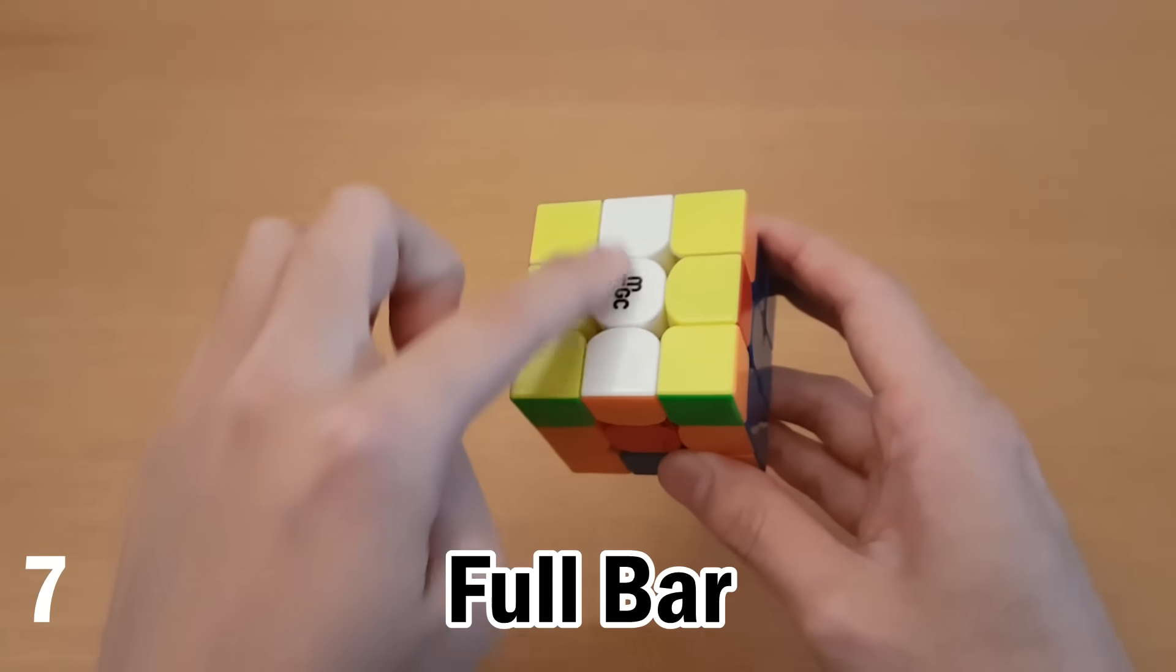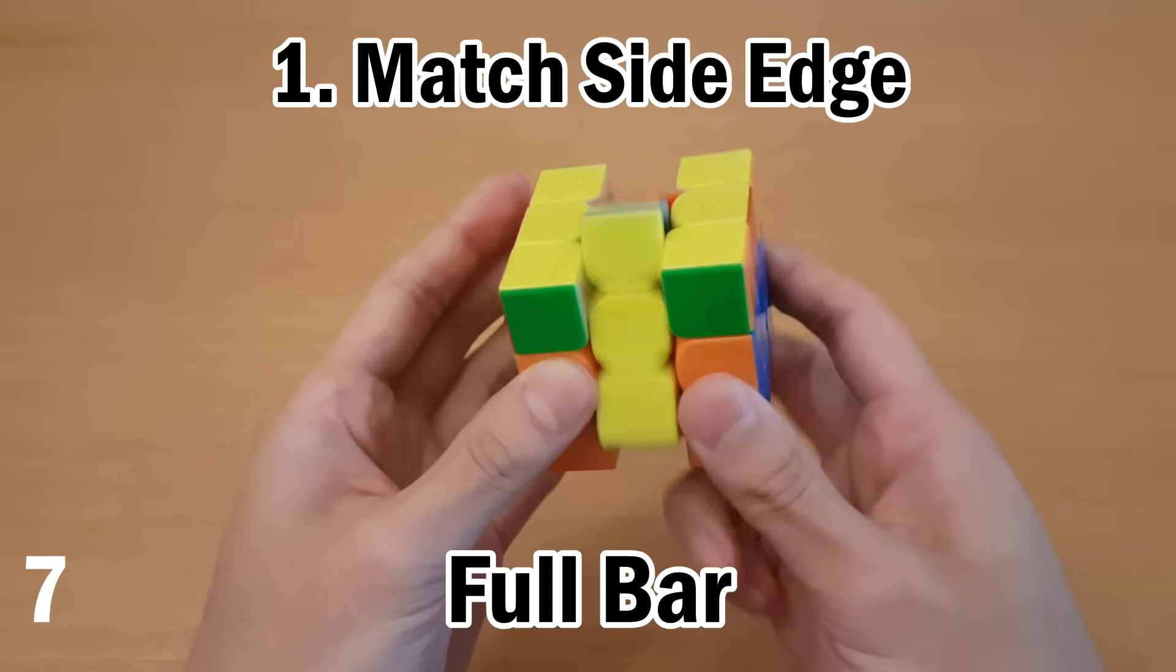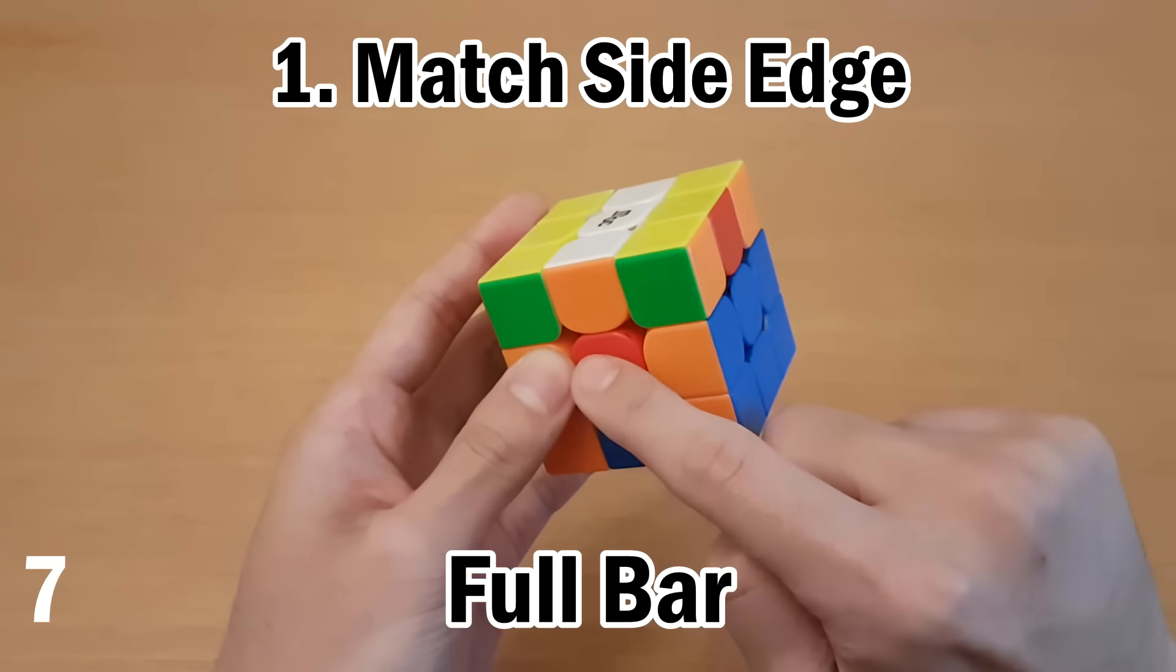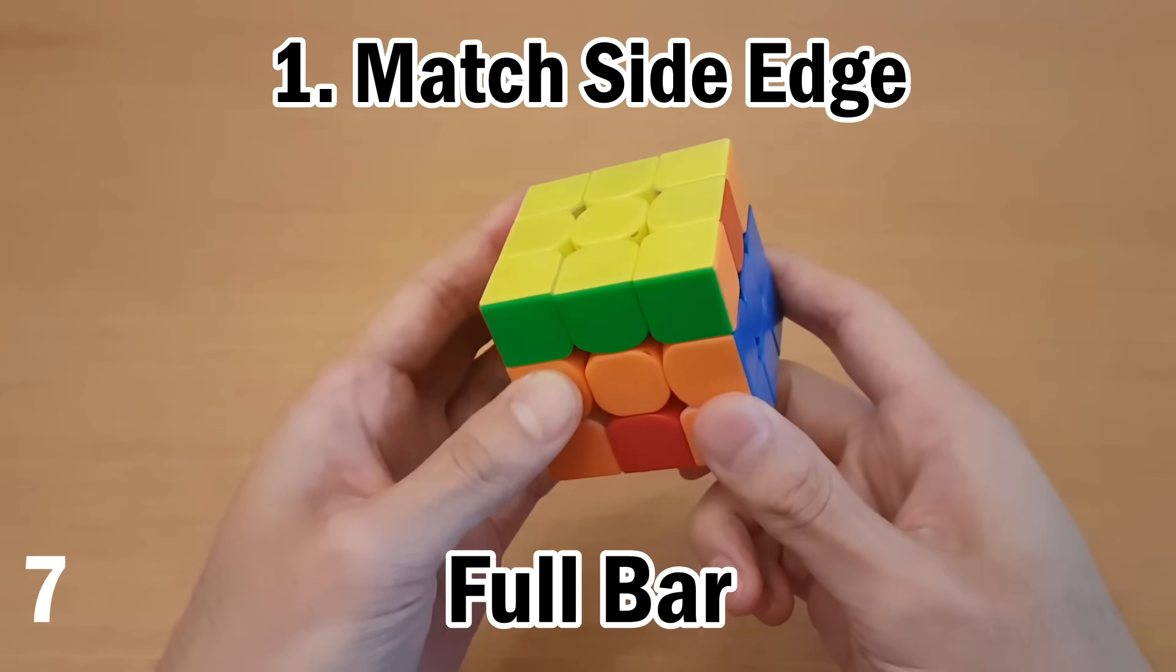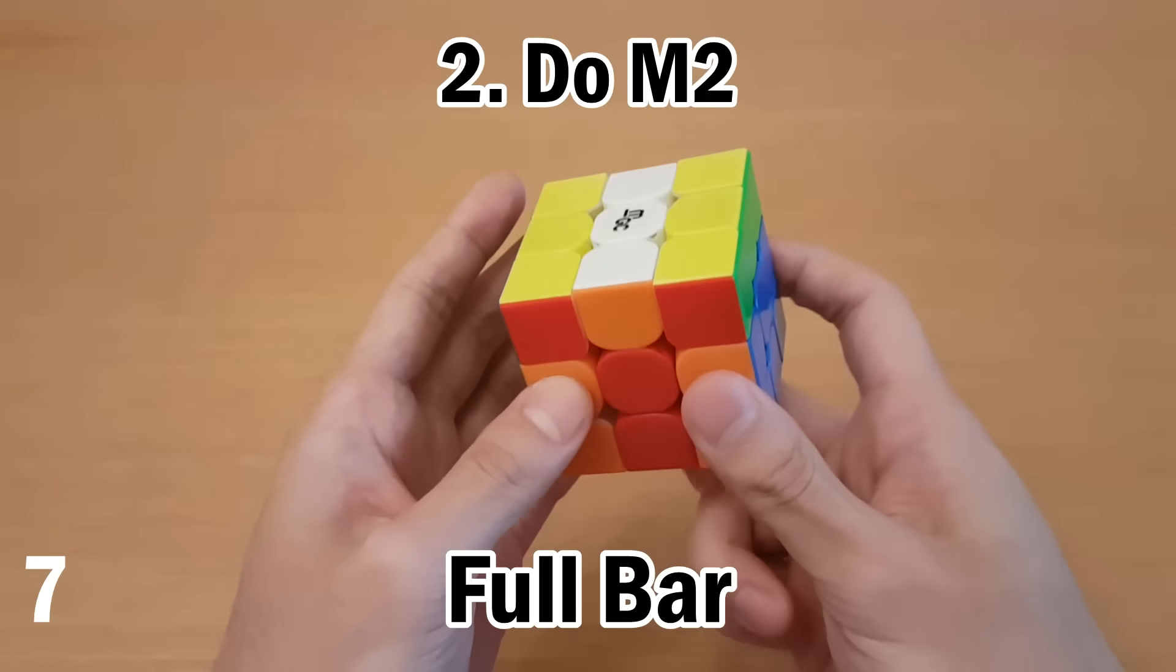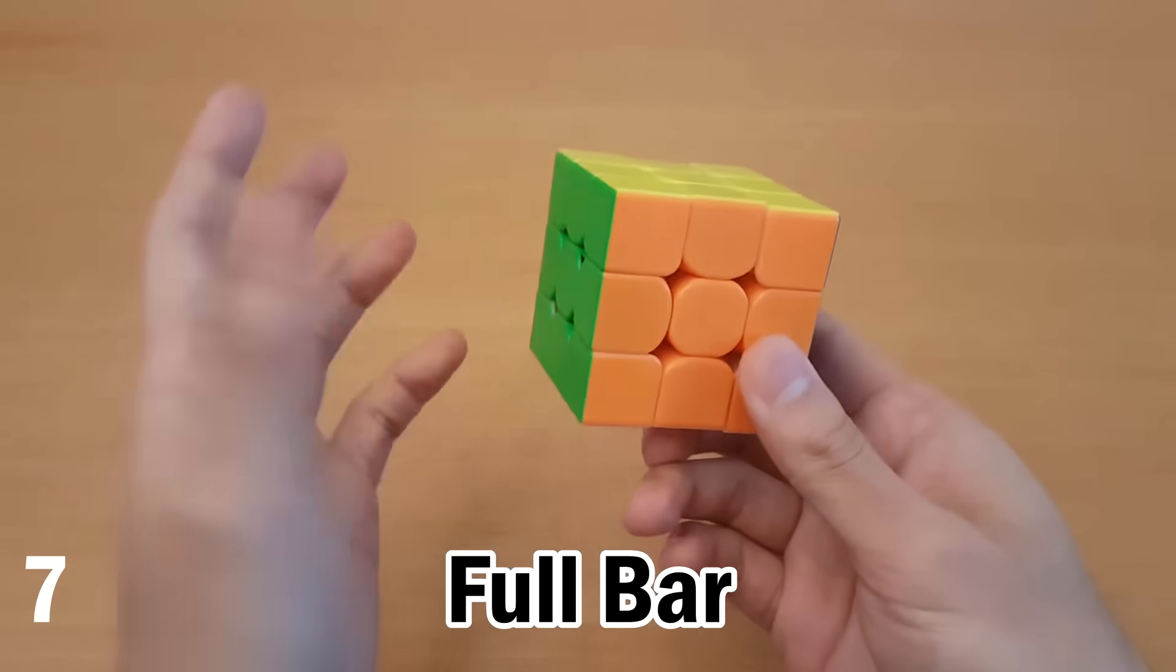Now this is the same case because we have a full bar that won't get broken. So you're going to do M2 and again, this and this, they match. So I'm going to move that to the back and then afterwards, always do M2 and maybe a little bit more afterwards.